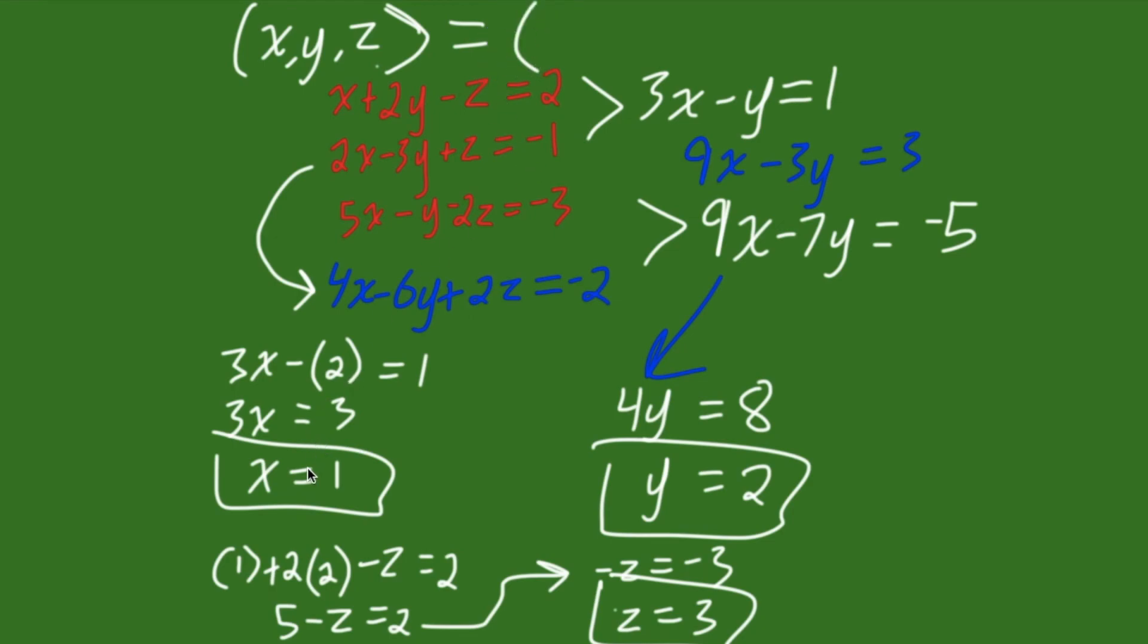Is equal to, and then we just pop in our values. So, we have x first, and x is 1. So, we have 1, comma, y, which is 2, comma, z, which is 3. So, our answer is x, y, z equals 1, 2, 3.